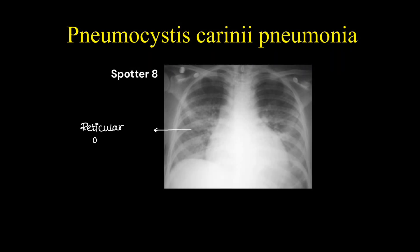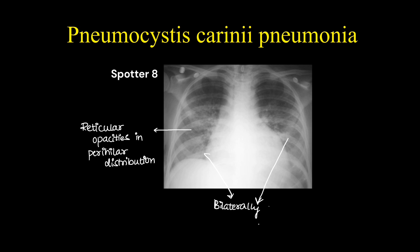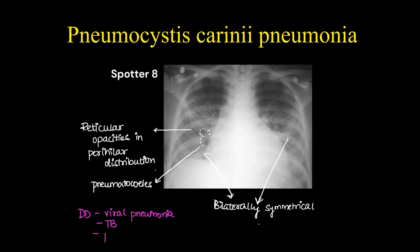On this chest x-ray we can see bilateral perihilar reticular opacities, which are symmetrical in nature. This is a case of Pneumocystis carinii pneumonia. There are pneumatoceles which point towards Pneumocystis carinii. Otherwise, the differential diagnoses include viral pneumonia, tuberculosis, or pulmonary edema.